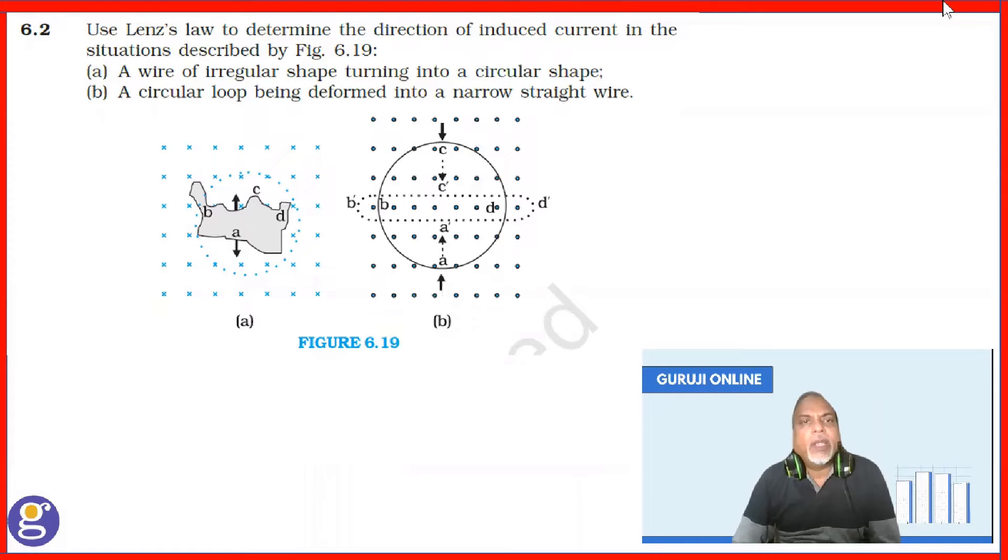Just see the figures A and B. Let us do one by one. In this case, your magnetic field that is B is cross. That means it is going inside the plane. Now, a wire of irregular shape turning into a circular shape.